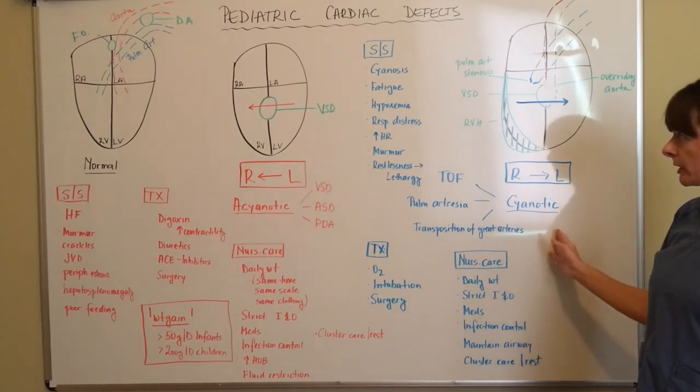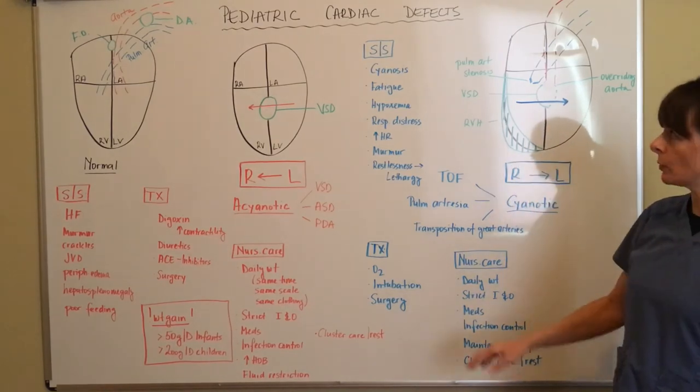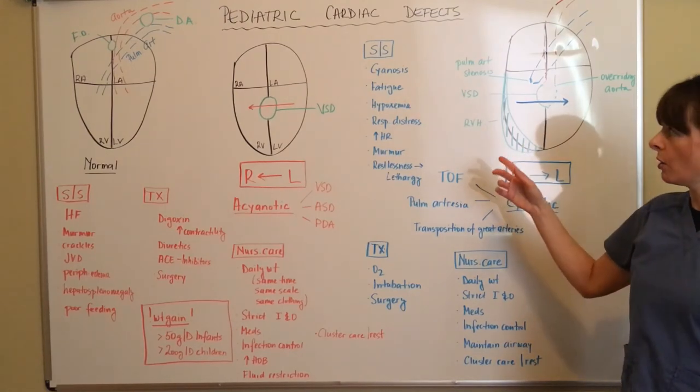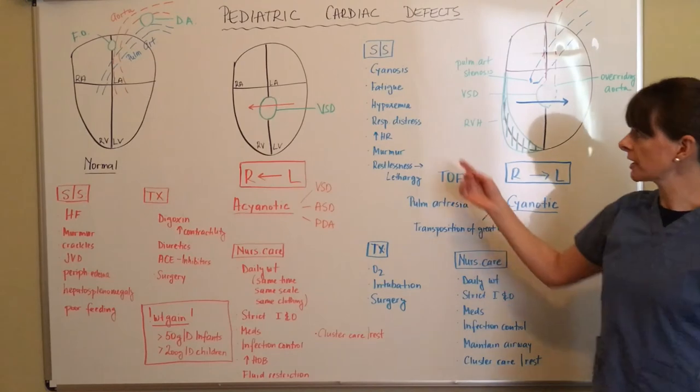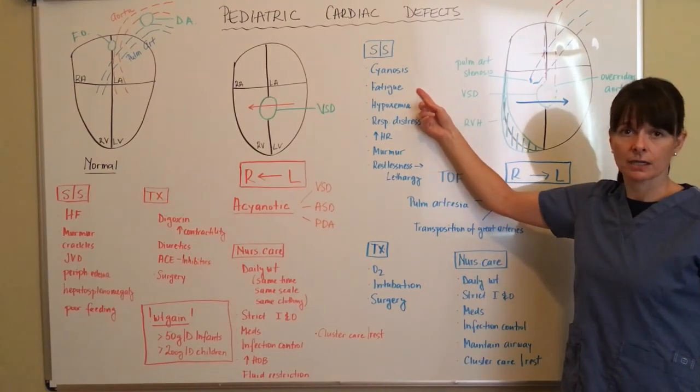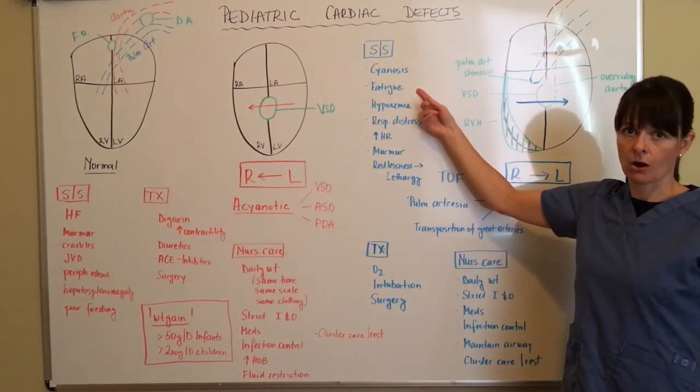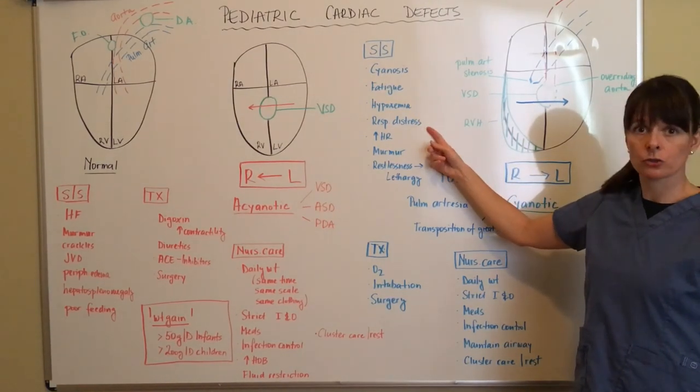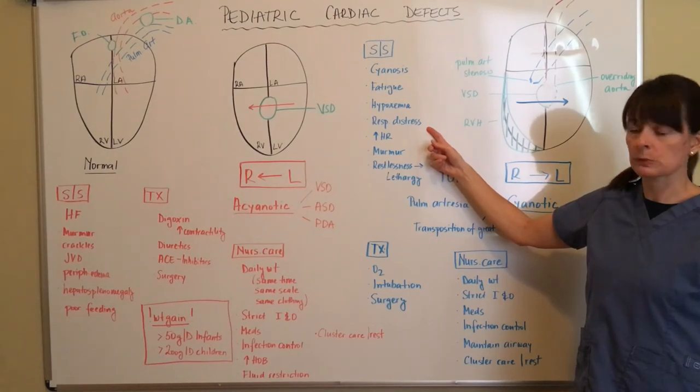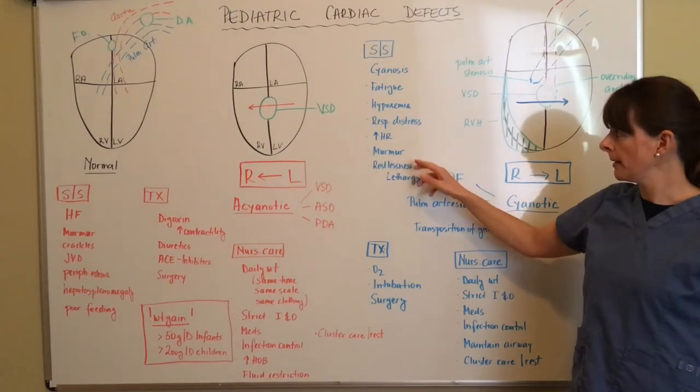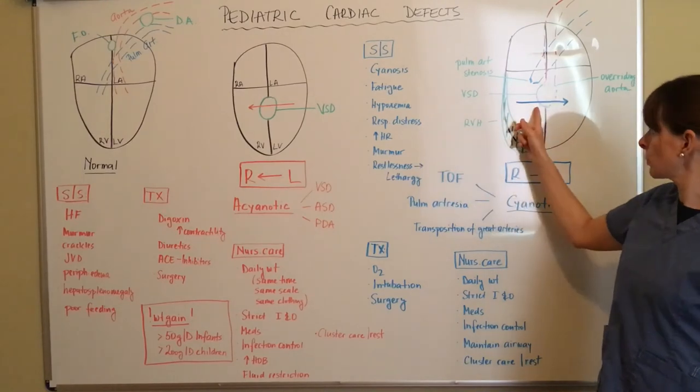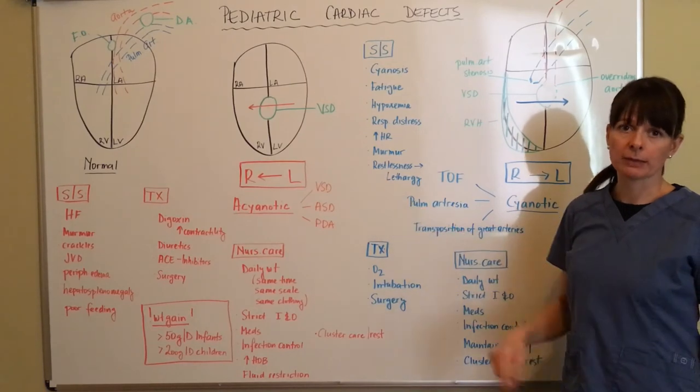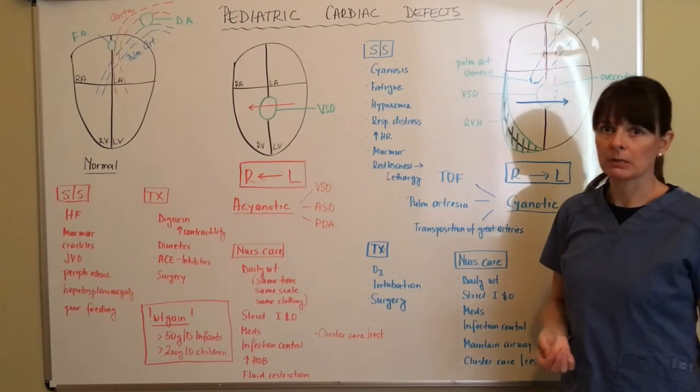So clearly with cyanotic defects signs and symptoms are going to include cyanosis. If the patient has Tetralogy of Fallot or any of these other cyanotic defects they are going to be very fatigued. They're going to be working very hard to breathe and to oxygenate their bodies. There's going to be hypoxemia. They're going to be in respiratory distress, all varying degrees of respiratory distress. They're going to be tachycardic. Again they're going to have a murmur because we have this abnormal opening here. They might be restless but then later on they might become lethargic which is actually worse than being restless.